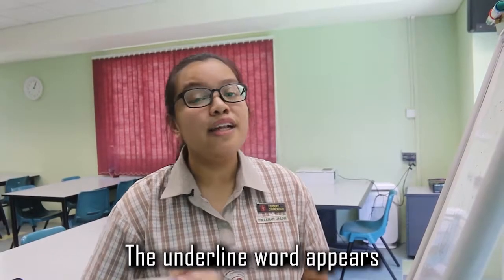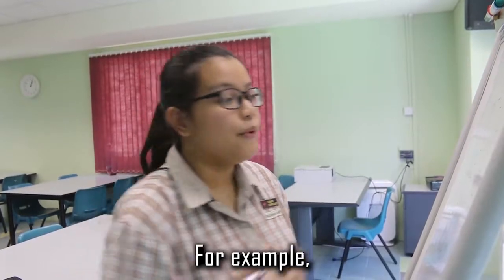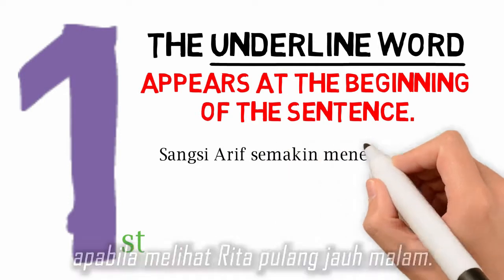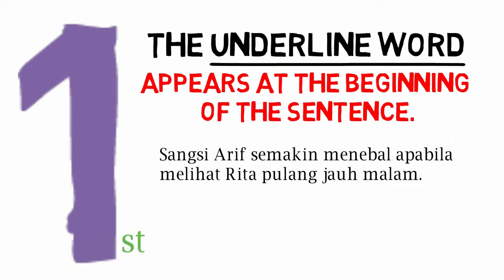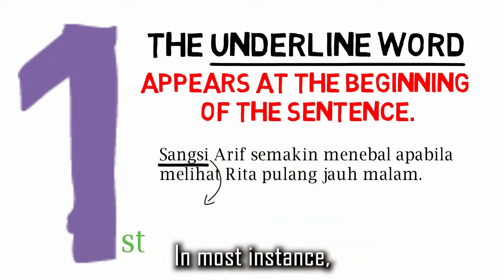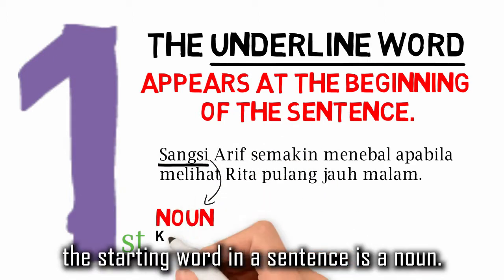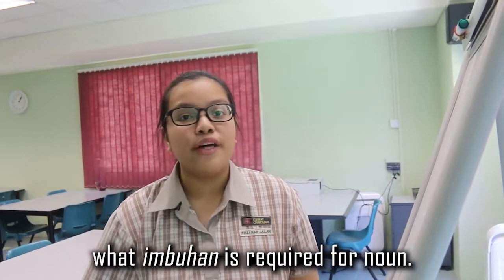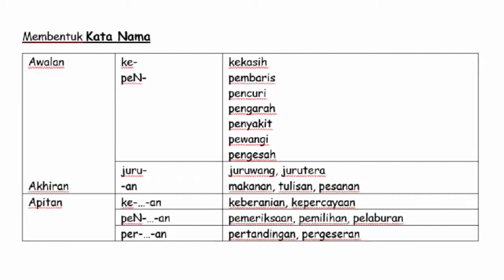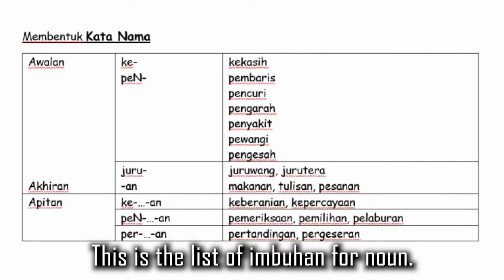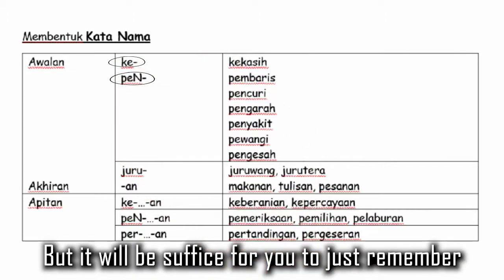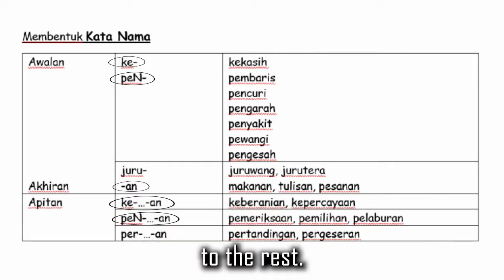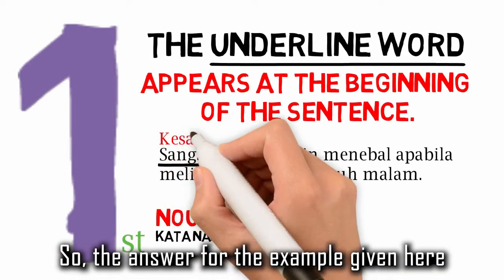The first rule for nouns: the underlined word appears at the beginning of the sentence. For example, 'Sangsi Arif semakin menebal apabila melihat Rita pulang lewat malam.' In most instances, the starting word in a sentence is a noun. Now that you know the answer is a noun, what impohan is required for a noun? This is the list of impohan for nouns, but it will suffice to just remember this as they are used most predominantly in an impohan exercise. So the answer for the example given here is kesangsian.